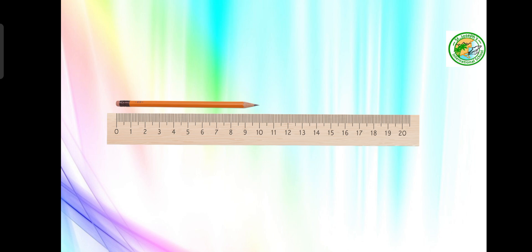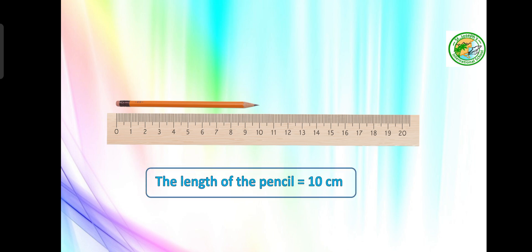How can we measure the length of small objects? For example, take your pencil and put it on your ruler to find its length. From the example, the length of the pencil equals 10 centimeters, measured from zero to 10.